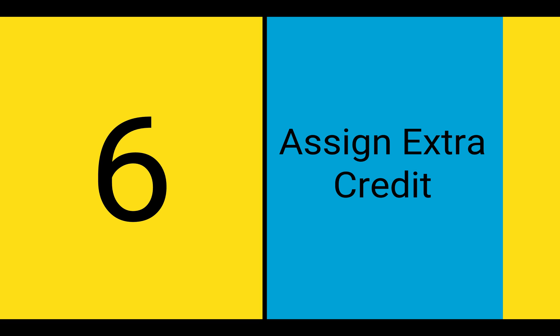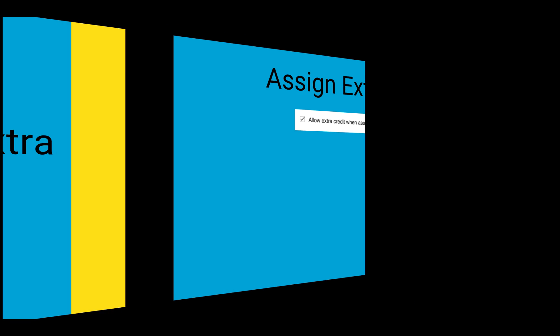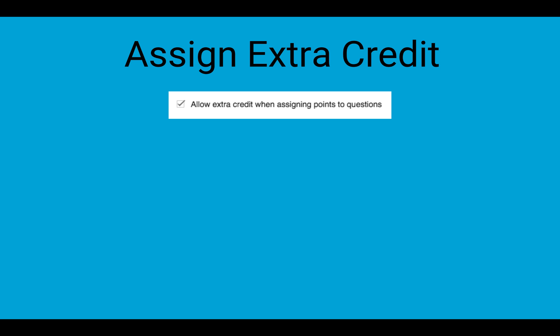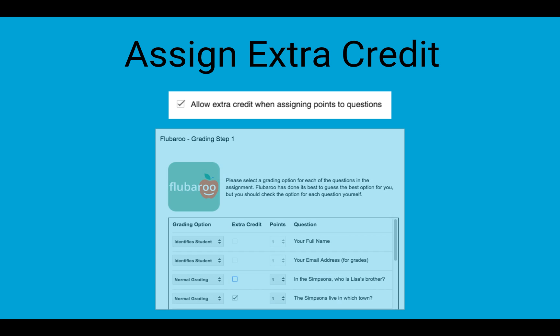Number 6. Assign Extra Credit. Want to assign an extra credit question or two? No problem. Go into the Advanced Options from the Fluberoo menu and check Allow Extra Credit When Assigning Points to Questions. The next time you grade, you'll see a column called Extra Credit in Step 1 where you can assign questions extra credit.